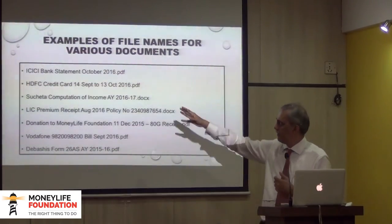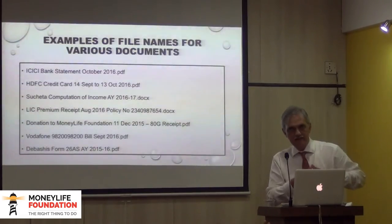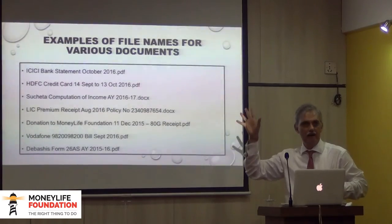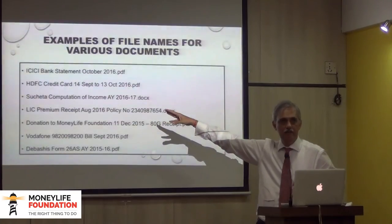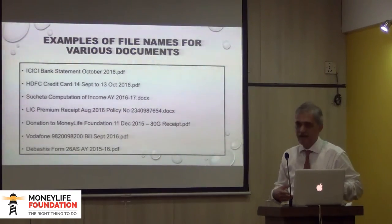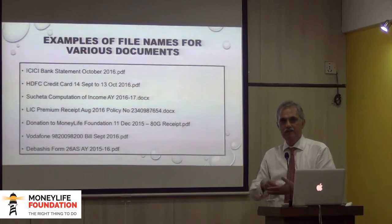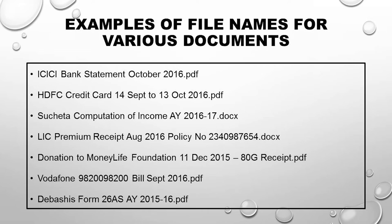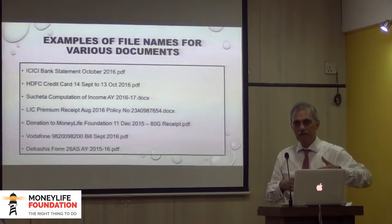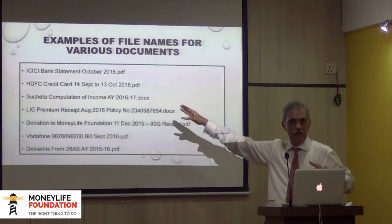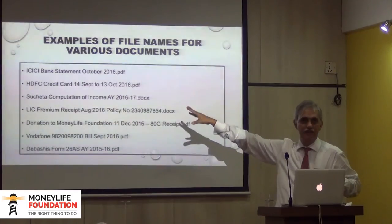For example, in my bank statement folder, if I have accounts with five different banks, I need to include the bank name. If I just say 'bank statement October 2016,' how do I find KOTAK, HDFC, ICICI, or DENA? So I would name the ICICI bank statement for October 2016 as 'ICICI bank statement October 2016 PDF.' Including 'bank statement' matters because if you also get a TDS certificate from ICICI bank for August, October, or November, the names could clash.